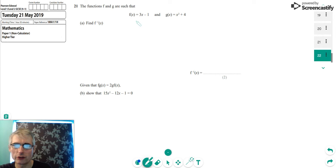So what we're given is two functions. We're given f of x equals 3x minus 1. And we're given that g of x equals x squared plus 4. And what we've been asked to do is find f minus 1 of x, which is the inverse function of f.